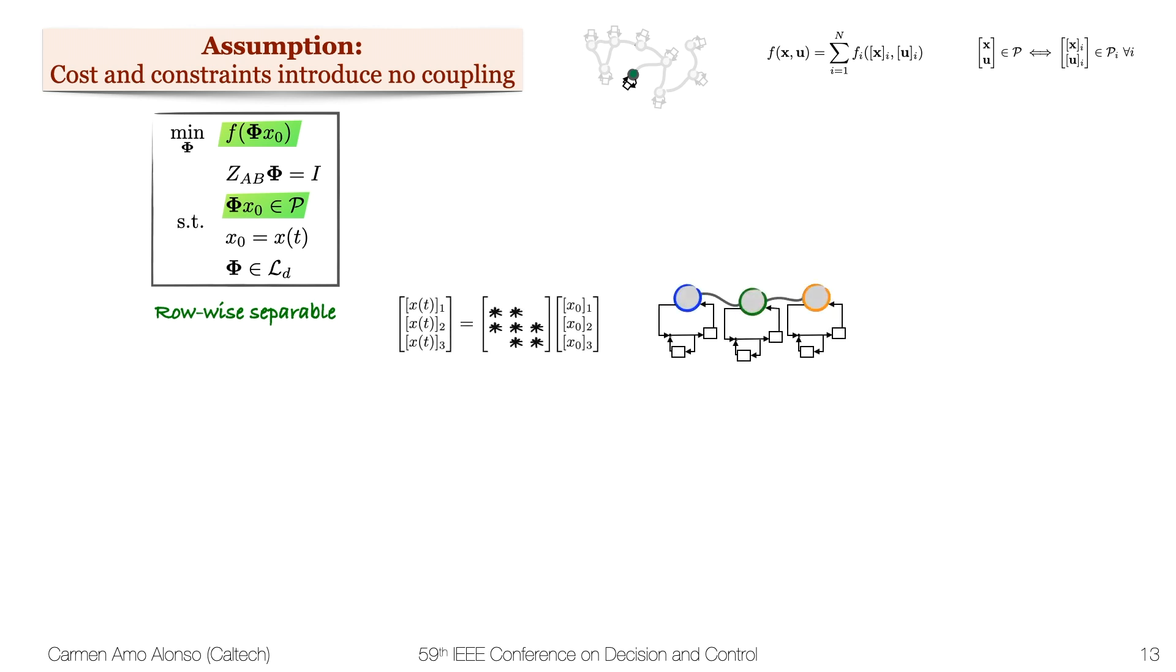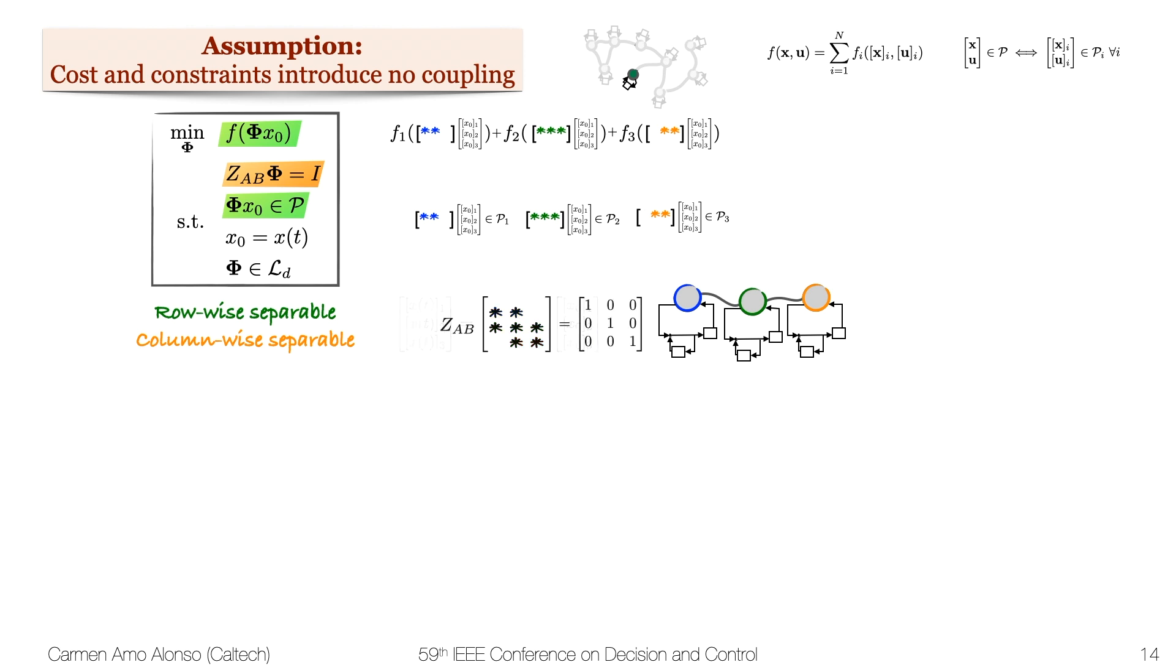To illustrate this, let me just use the three node network. Because its state and input correspond to a row, we can separate the rows of phi across the subsystems. This other constraint is directly column-wise separable because of the way matrix multiplication works. If we were to distribute this computation across the subsystems, this is how we would do it.